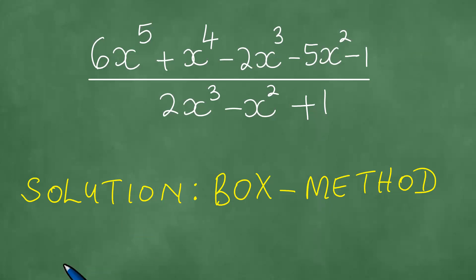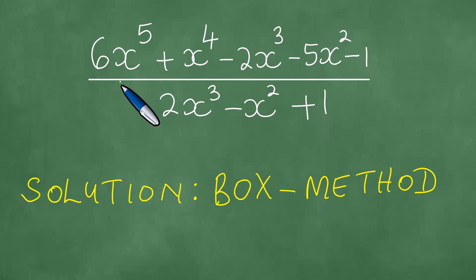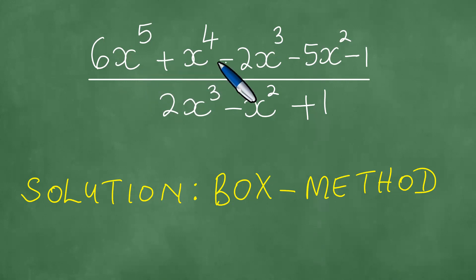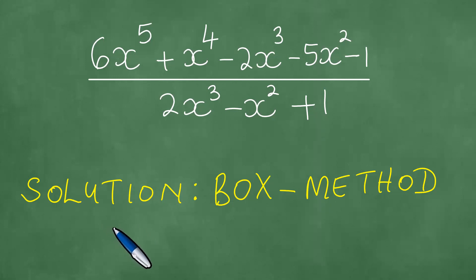We are here to do polynomial division. We have been given 6x to the fifth power plus x to the fourth power minus 2x cubed minus 5x squared minus 1, all divided by 2x cubed minus x squared plus 1. We need to prepare a solution using the box method of polynomial division.